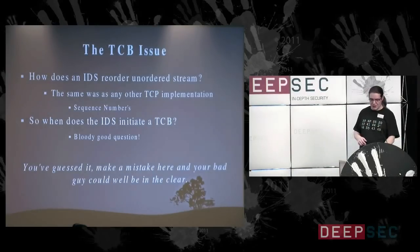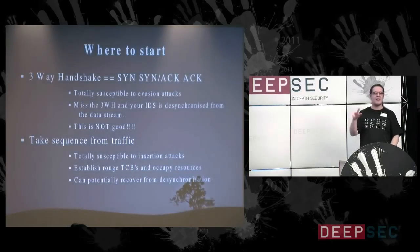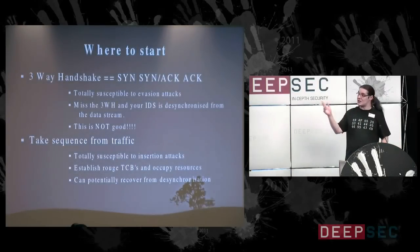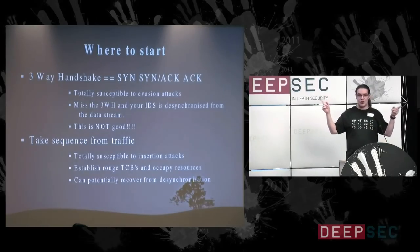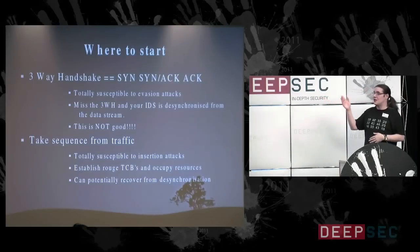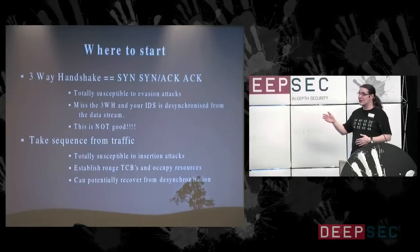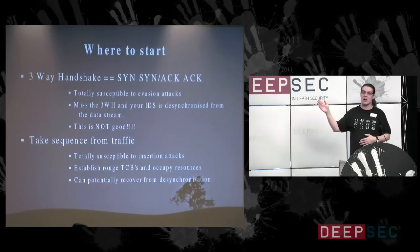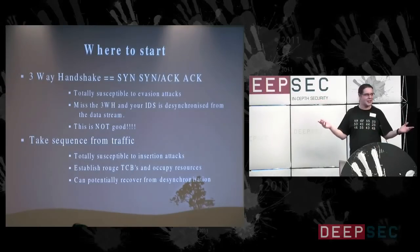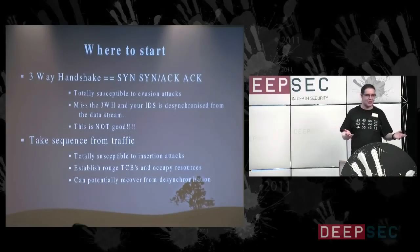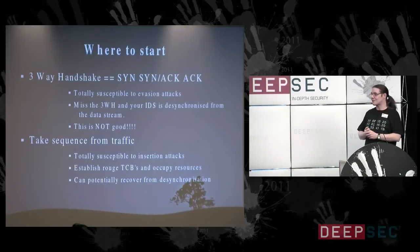There are two ways to start a TCB: we can wait for the three-way handshake — that's normally how endpoints set up sequencing. This is great for me as an attacker, because if I can make the IDS miss that three-way handshake, the whole communication won't be able to be sequenced — it's just data on the wire, just noise. The IDS does not have the correct information to reassemble that data. We call that desynchronized — it's desynchronized from the stream.